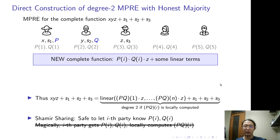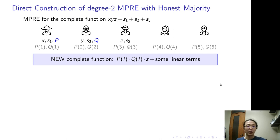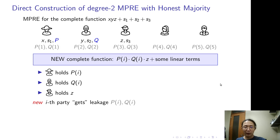So this reduces to a new complete function. It's sufficient to just construct MPRE for P(i) times Q(i) times Z plus some linear term. So let's take a closer look. Here, P(i), Q(i), and Z are held by different parties. This seems the same as the initial complete function. But the i-th party gets leakage P(i)Q(i). What does the leakage mean?